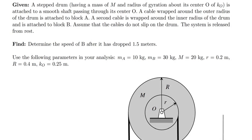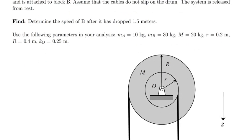We're asked to assume that the cables do not slip on the drum, and to assume furthermore that the system is released from rest. Given this information, we're asked to determine the speed of block B after it's dropped a distance of 1.5 meters.